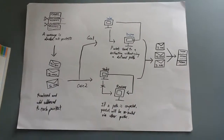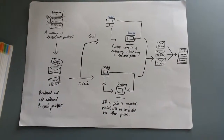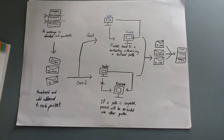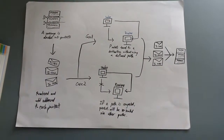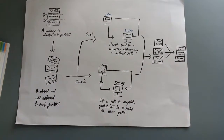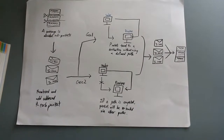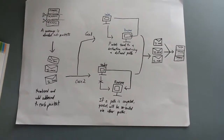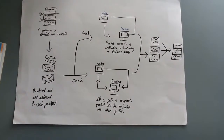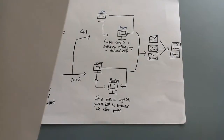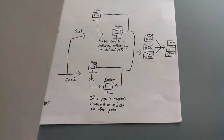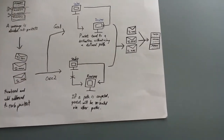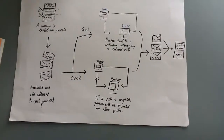TCP is a transport layer protocol in the OSI 7-layer model, and IP is the network layer in the OSI 7-layer model.